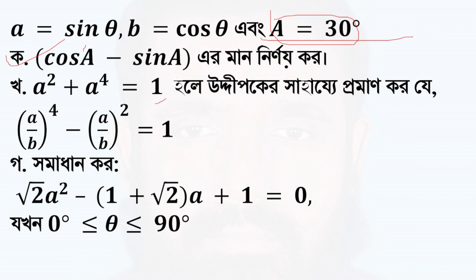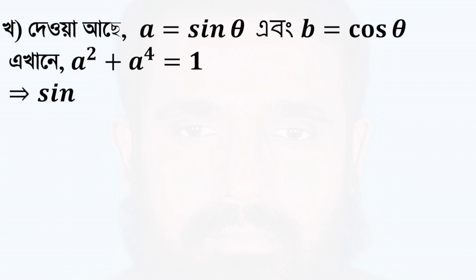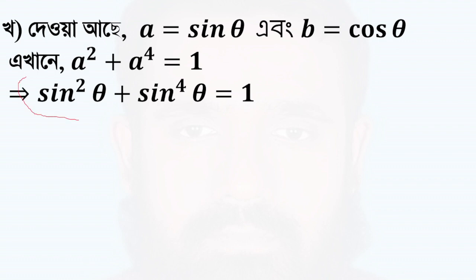We can write a is equal to sin and b is cos. Sin by cos is b. If we have sin squared theta plus sin to the power 4 equal to 1, then we can apply the sin squared theta identity.